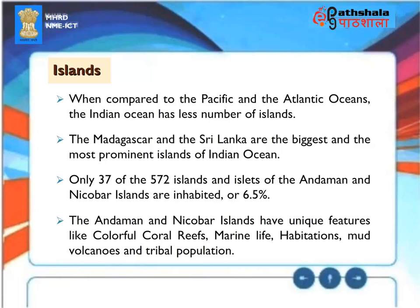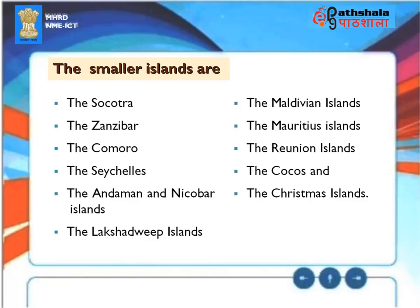Islands. Compared to the Pacific and Atlantic Oceans, the Indian Ocean has fewer islands. Madagascar and Sri Lanka are the biggest and most prominent islands. Only 37 of the 572 islands of the Andaman and Nicobar Islands are inhabited (6.5%). The Andaman and Nicobar Islands have unique features like colourful coral reefs, marine life, mud volcanoes, and tribal population. Smaller islands include Socotra, Zanzibar, the Comoros, the Seychelles, Andaman and Nicobar Islands, Lakshadweep Islands, Maldivian Islands, Mauritius, Reunion, Cocos, and Christmas Islands.